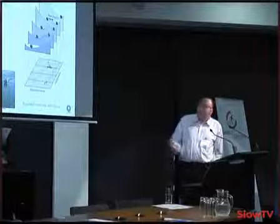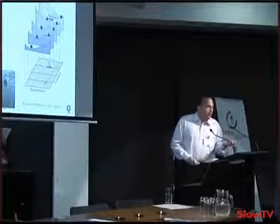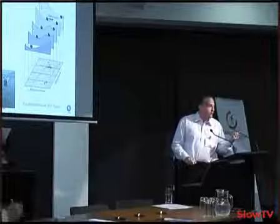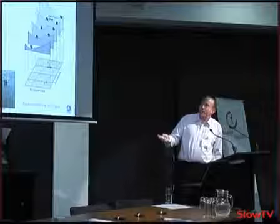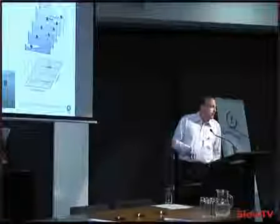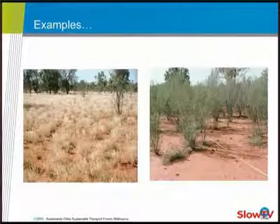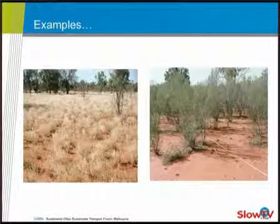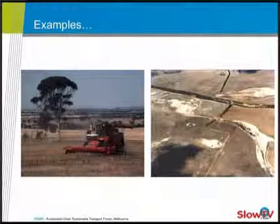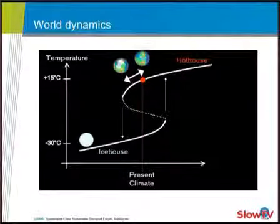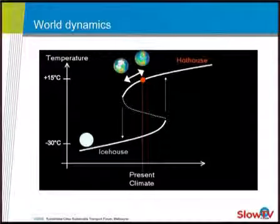Our actions can actually change the shape of the landscape the ball is rattling around on. As we change that shape, we may be cutting off our ability to track back to our preferred stable state. Going through a number of examples, we can see these transitions quite clearly — transitions between grasslands and woody thickets, and transitions from productive farmland to arid wasteland.